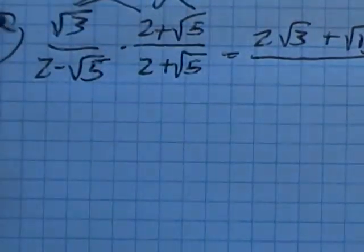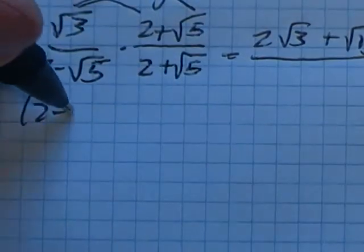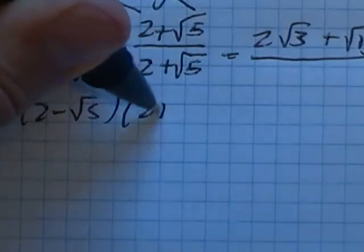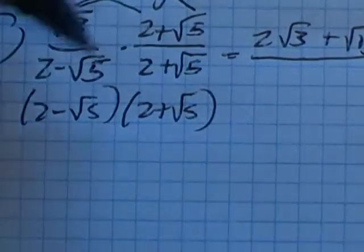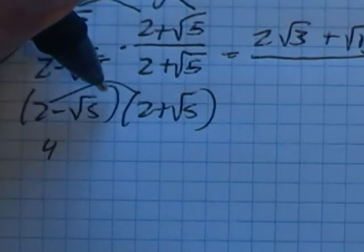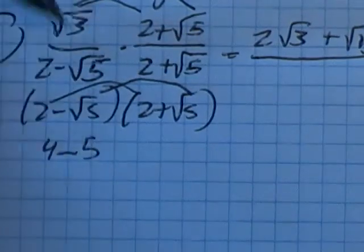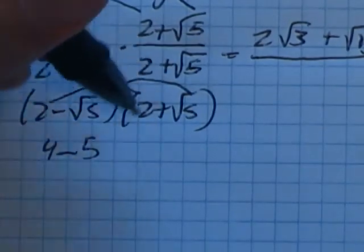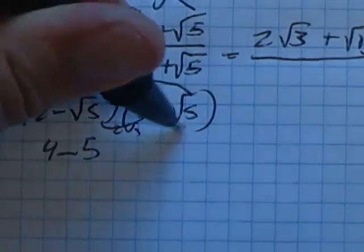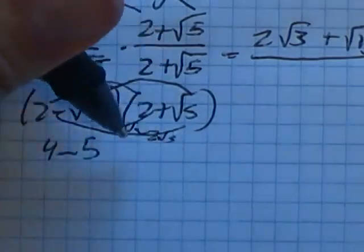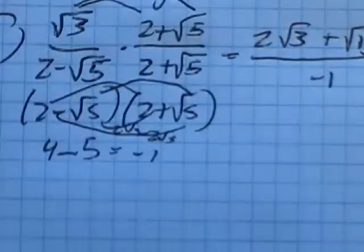And in that denominator, now I'm gonna have to multiply this out. So I have two minus root five times two plus root five. Two times two is four. Negative root five times root five is negative five. And then two root five, negative two root five, that cancels out. So that gives me a negative one in the denominator.